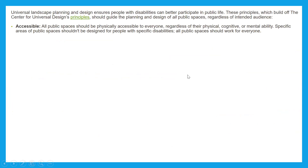Universal landscape planning and design ensures people with disabilities can better participate in public life. These principles, which build off the Center for Universal Design principles, should guide the planning and design of all public spaces regardless of intended audience. First: Accessible — all public spaces should be physically accessible to everyone regardless of their physical, cognitive, or mental ability. Specific areas of public spaces shouldn't be designed only for people with specific disabilities; all public spaces should work for everyone.